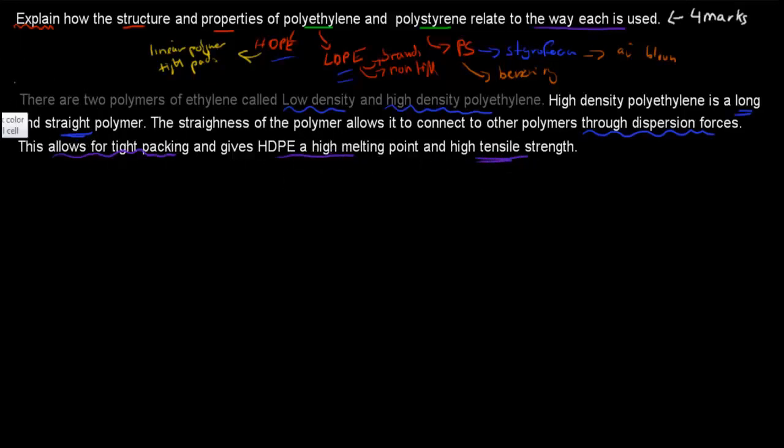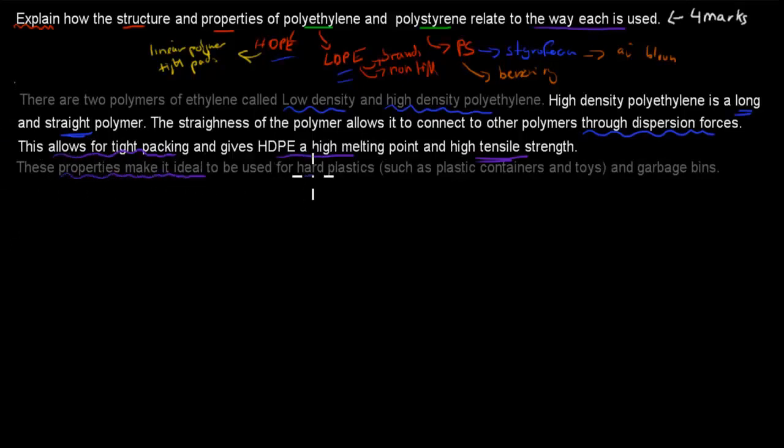We've given our first discussion about high-density polyethylene and said what is the structure and property. Now we're going to relate that to its use. These properties make it ideal to be used for hard plastics, obviously because of its high tensile strength and high melting point, such as plastic containers, hard plastic containers, toys, and garbage bins. So now we've related the actual properties and structures to its uses. That will give us at least a point if not two.